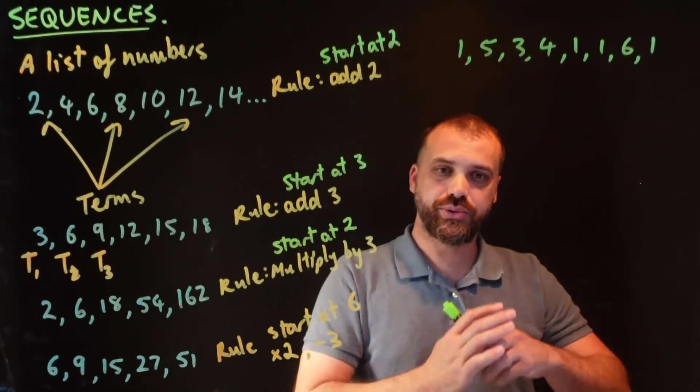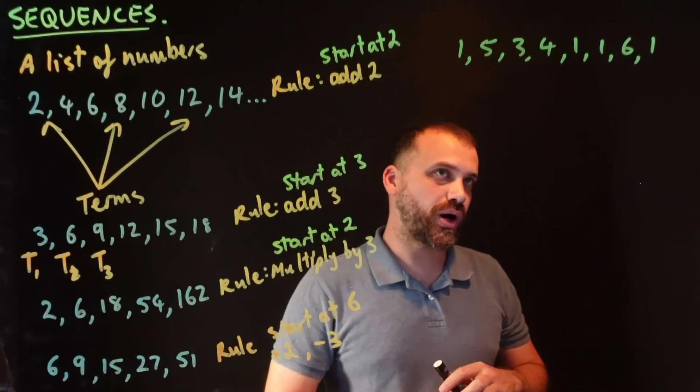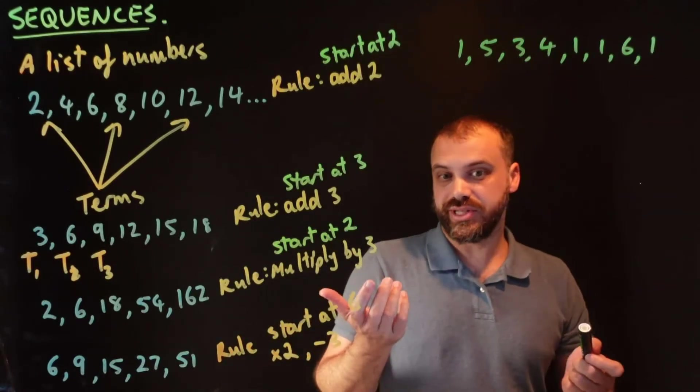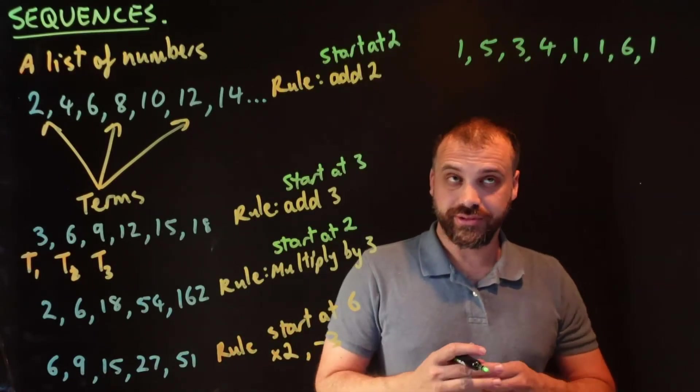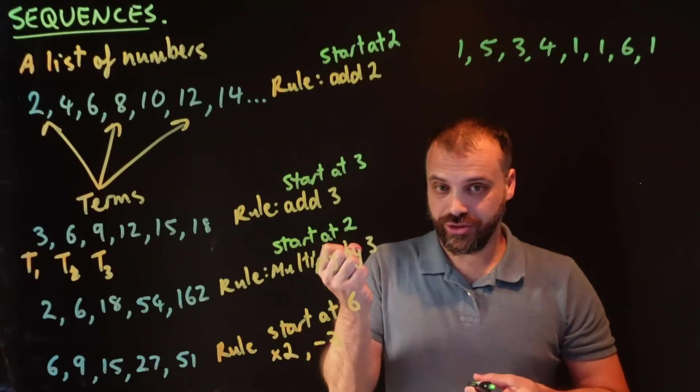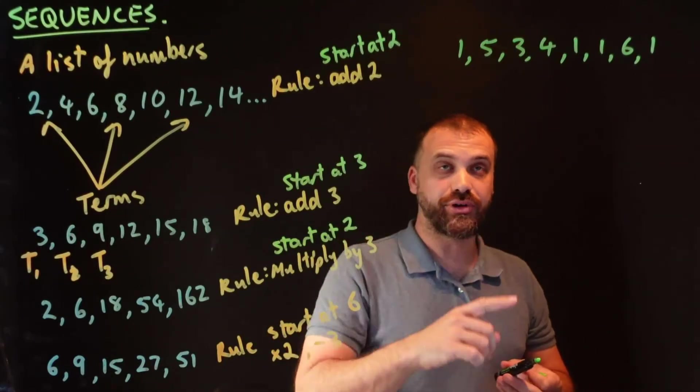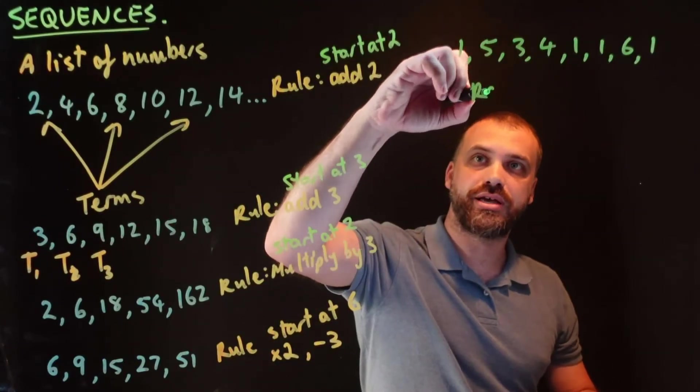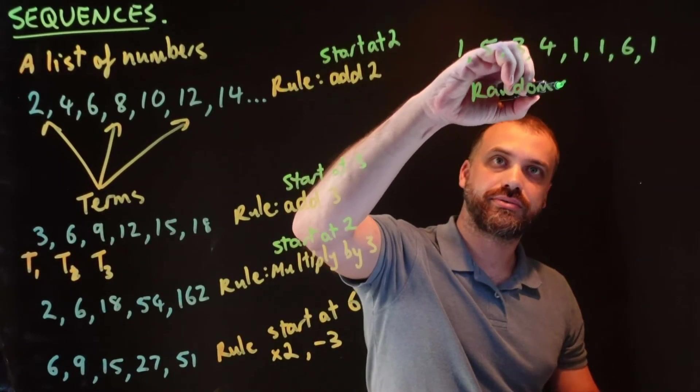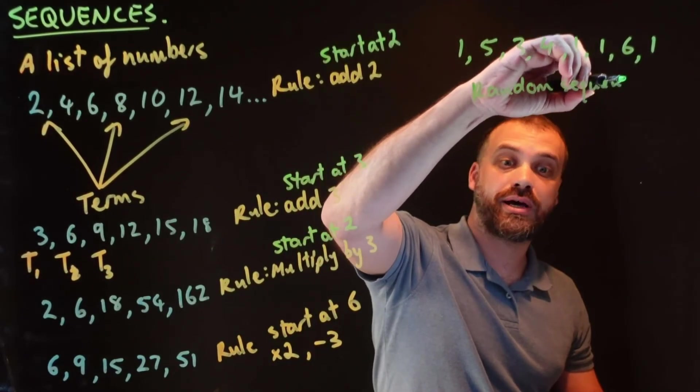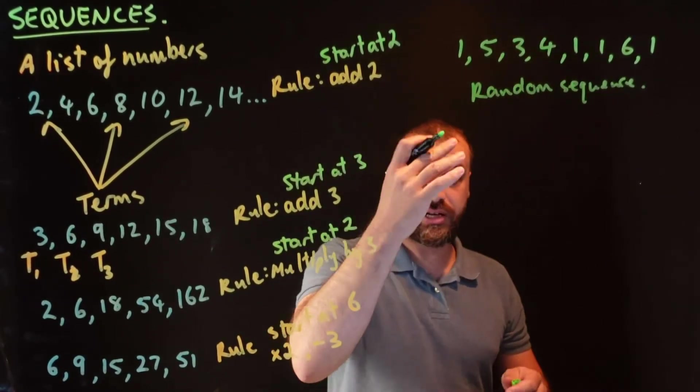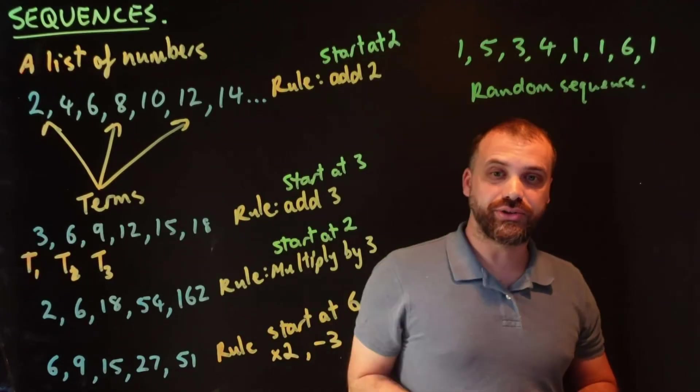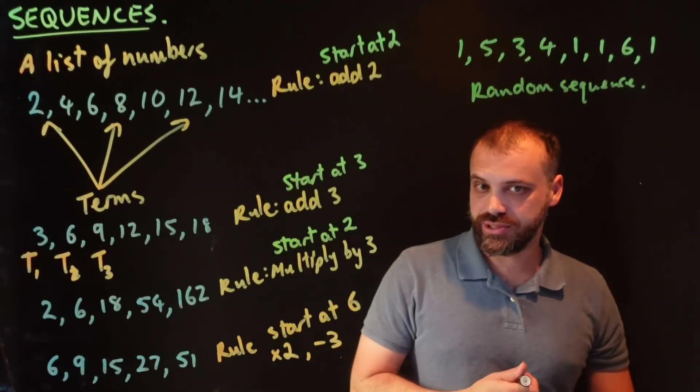What about this sequence here, 1, 5, 3, 4, 1, 1, 6, 1? What's that sequence? Well, that sequence is me rolling a dice. I got a dice out and I rolled it. I rolled it 8 times. We call this sequence a random sequence. I used a random number generator, a dice, and I just rolled it a bunch of times and I got this random sequence.